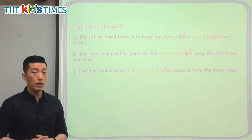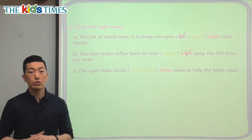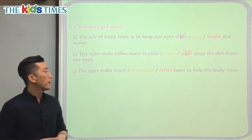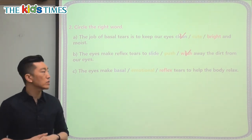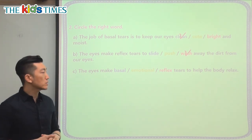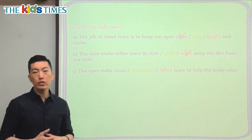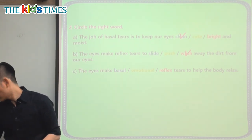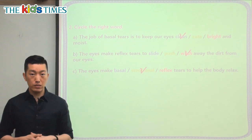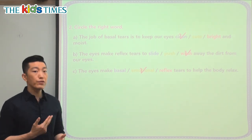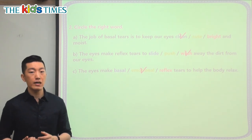The next time you get something in your eyes, remember today's article — your eye creates more basal tears to wash away the dirt or dust. The last question: the eyes make emotional tears to help the body relax. Basal tears keep your eyes moist, reflex tears occur when something is stuck in your eye, and emotional tears are when you're very happy or very sad and they cause you to relax.